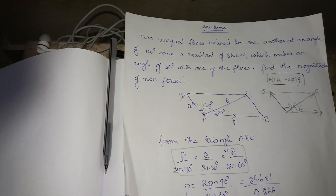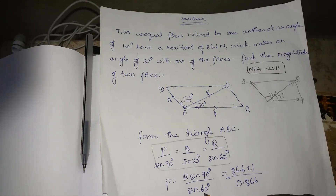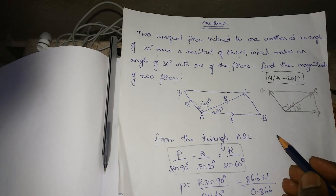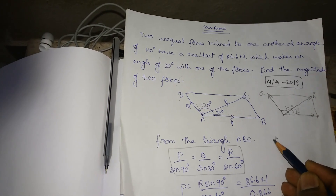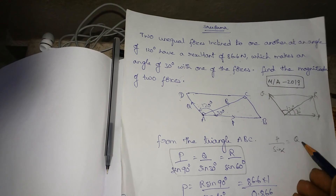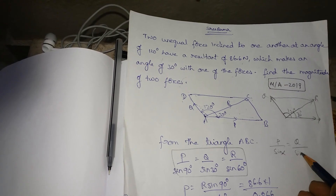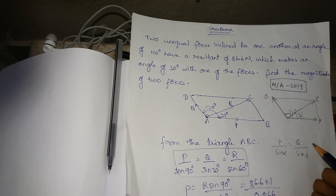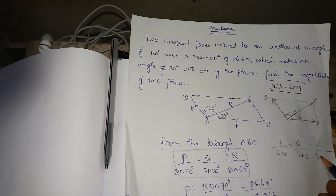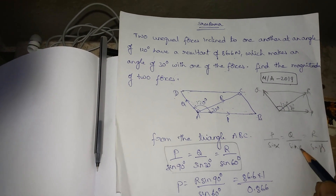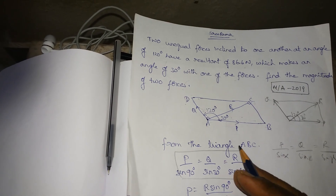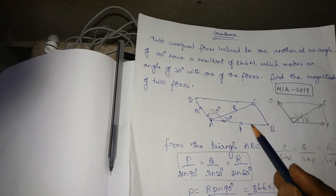So Lami's theorem formula: P divided by sin alpha is equal to Q divided by sin beta, and that is equal to R divided by sin gamma.